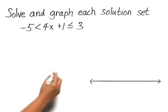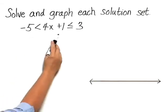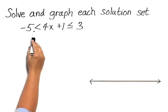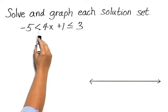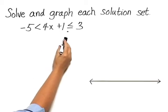Solve and graph each solution set. We have the compound inequality: negative 5 is less than 4x plus 1, which is less than or equal to 3.